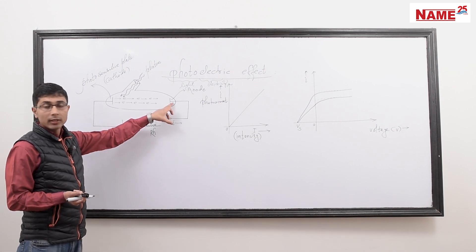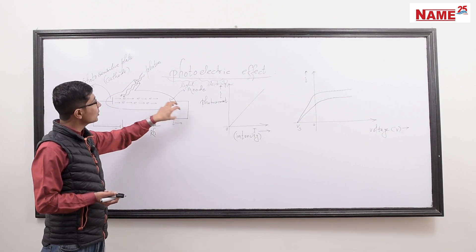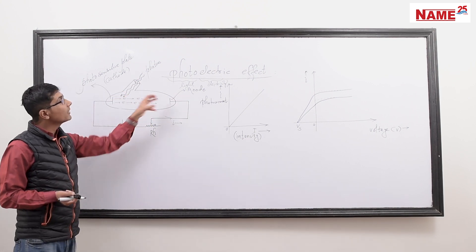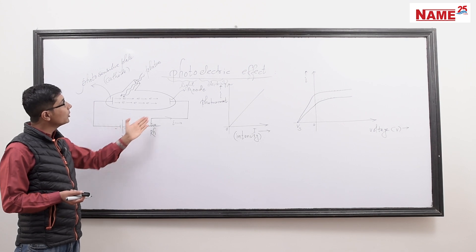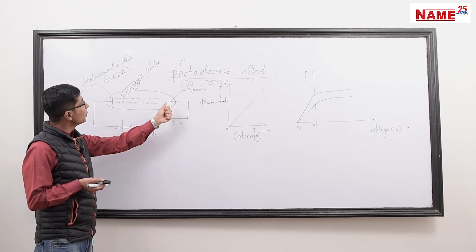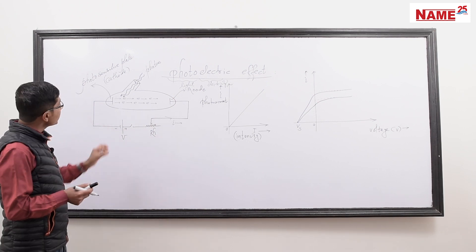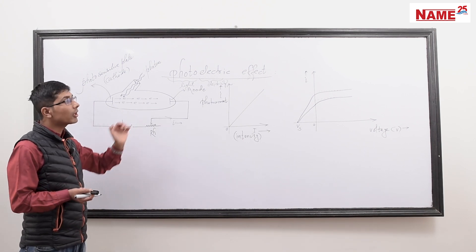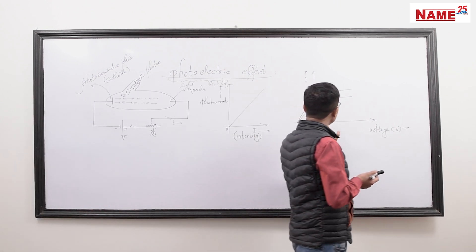When we apply voltage to the anode — a positive potential — the electrons are attracted and the current increases. As we increase the positive potential, the current increases up to a certain limit. Beyond that limit, the current reaches a maximum value and does not increase further.